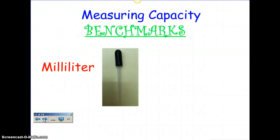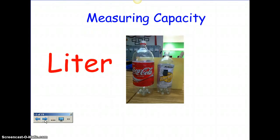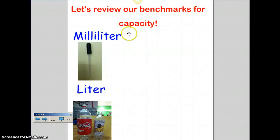Let's talk about our benchmarks for capacity. A milliliter is really tiny. When you look at a dropper — any time you've had a dropper, either for eye drops or for medicine — that's a milliliter, so that's something really small. Then you have a liter. If you've ever seen one of those soda bottles, that would be a liter. One liter is 1,000 milliliters, so it's going to take 1,000 drops of a milliliter to fill up a liter.